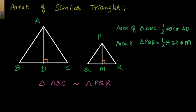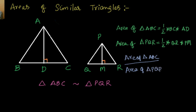Now, if I want to compare the areas of these triangles and find how they are related, I will be dividing them. So, area of triangle ABC divided by area of triangle PQR — the half cancels out — and I will have BC by QR into AD by PM.